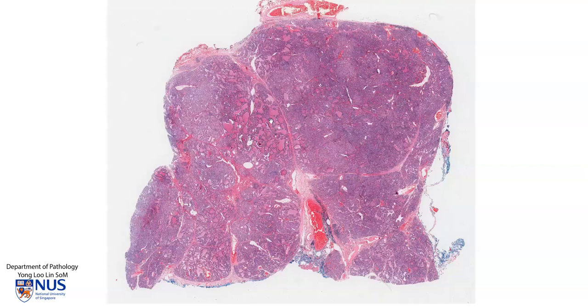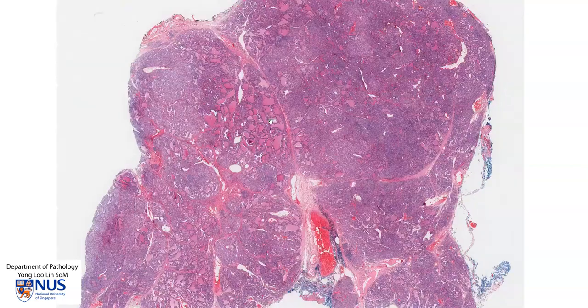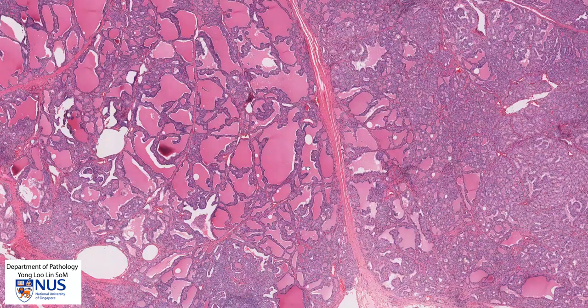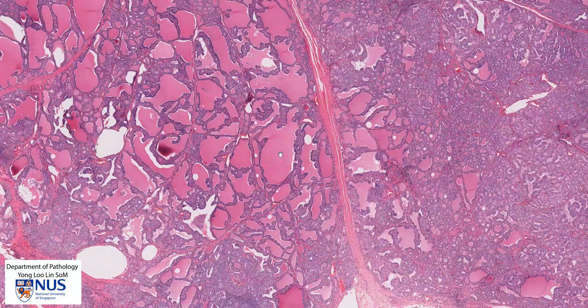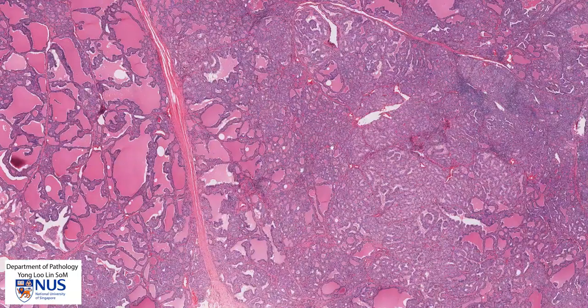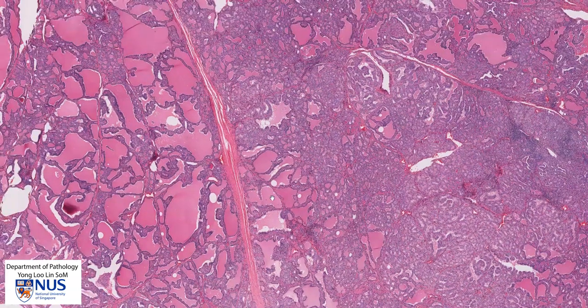The pink areas represent larger follicles, which contain more abundant colloid, while the blue areas represent smaller follicles. This is a case of Graves' disease that has been treated.